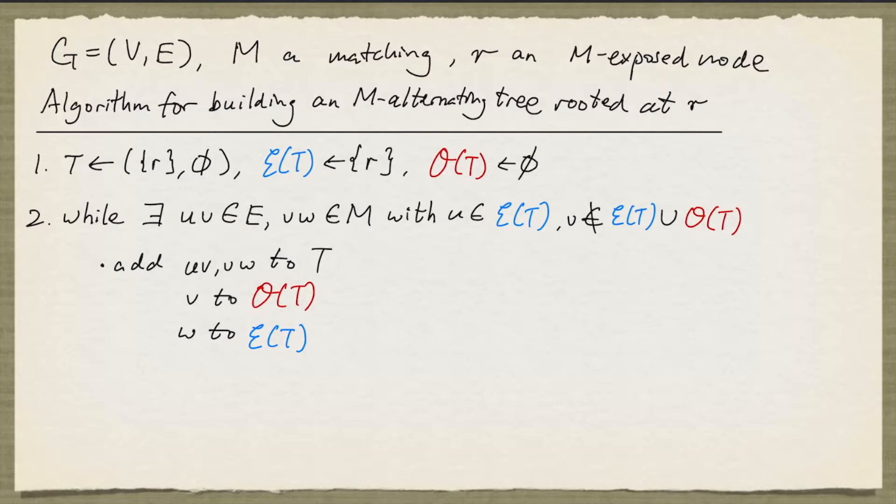So let's do an example. Suppose that this is my graph, and I'm going to mark the matching edges with double lines. We're going to pick this node here as my root node. So at the beginning, T is just the node R. I'm going to mark the nodes in the even set by blue and those in the odd set by red.